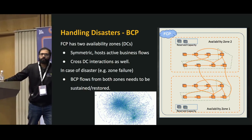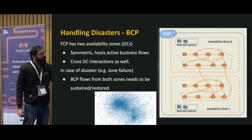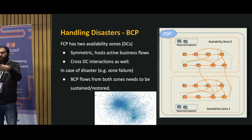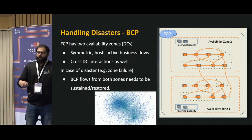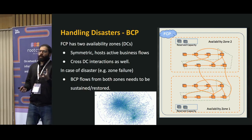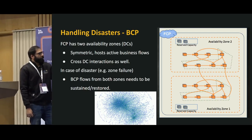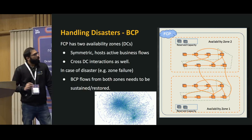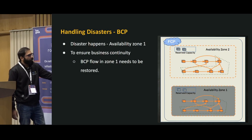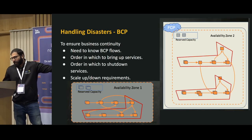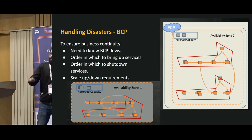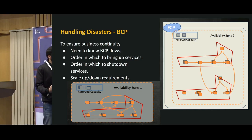If a DC goes down, we have to restore this BCP flow. To do that, we need to know the boot order of services — we need the topological sorted order of the dependency graph. A service with no dependencies has to be brought up first. Knowing the dependency graph helps identify which services need to boot first in an alternate zone. We also need to shut down services running in the disaster zone and bring them back up in an alternate zone.